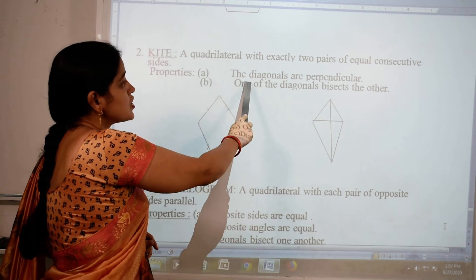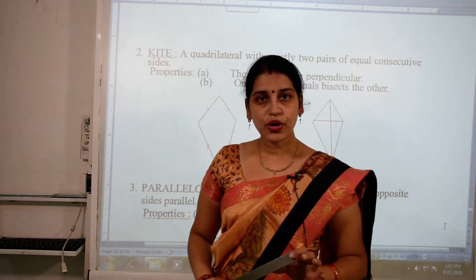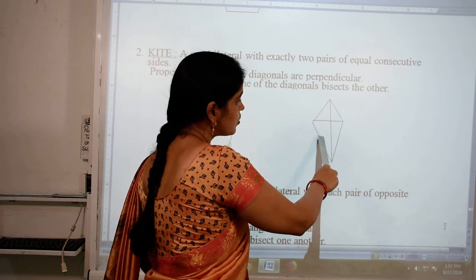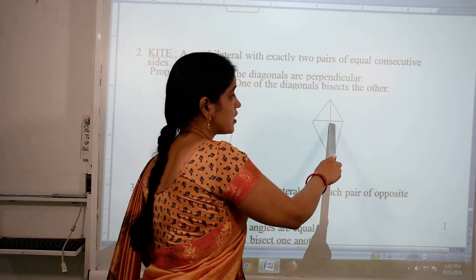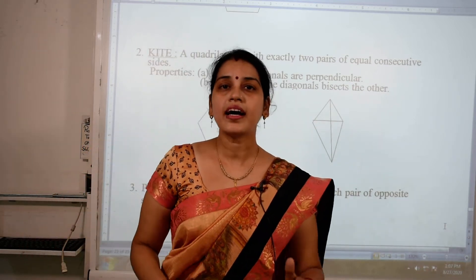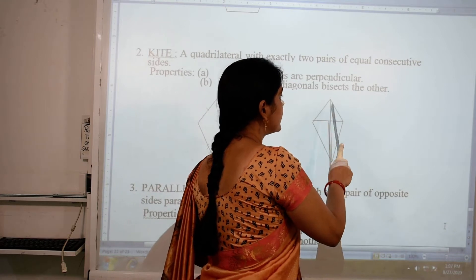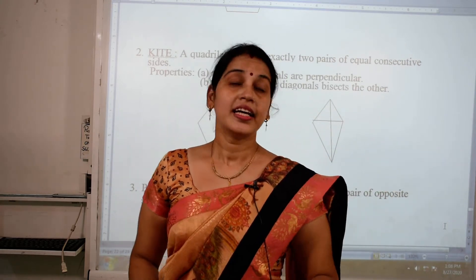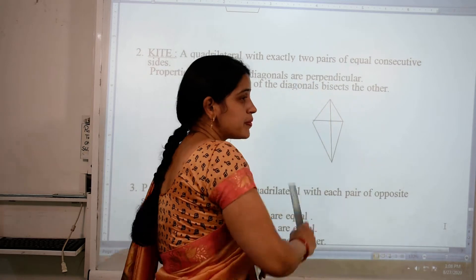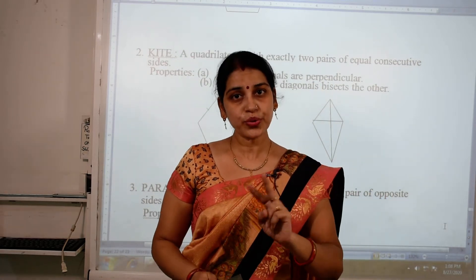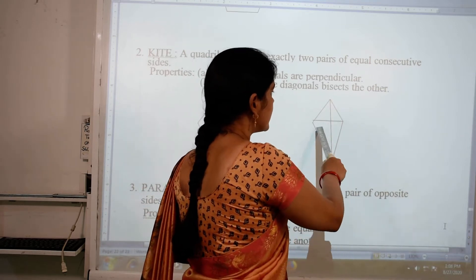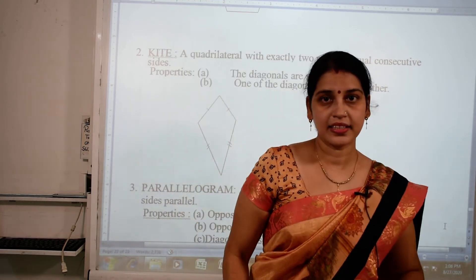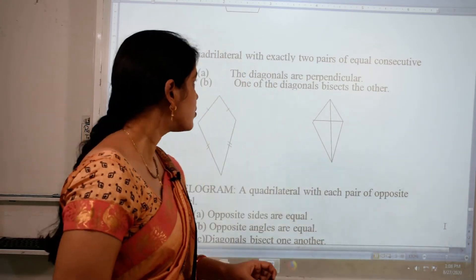Now the properties of kite: the diagonals are perpendicular — diagonal means joining opposite vertices — so these diagonals form a 90 degree angle. The second property is that one of the diagonals bisects the other, meaning it divides it into two equal parts. Like this diagonal divides the kite into two equal parts.